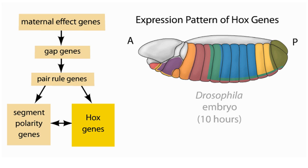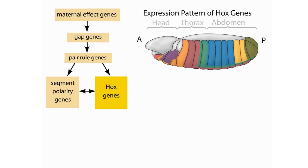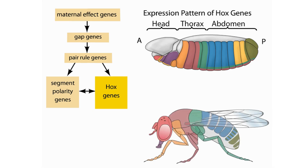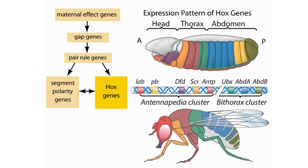The Hox genes are expressed in the embryo long before the structures of the segments, such as legs or antennae, actually appear. These genes are grouped into the Antennapedia cluster and the Bithorax cluster. Hox genes encode a family of transcription factors that are expressed in different combinations along the length of the embryo, helping to determine cell fate within each segment.